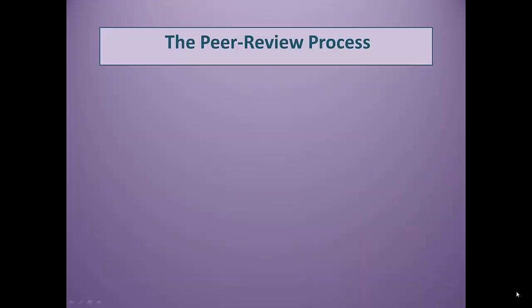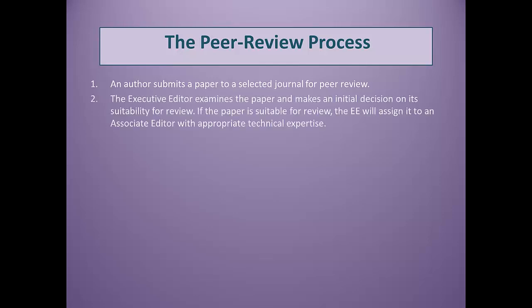The peer review process involves the following steps. First, an author submits a paper to a selected journal for peer review. The executive editor then examines the paper and makes an initial decision on its suitability for review. He or she may immediately decline papers that do not appear suitable either because of scope or quality; otherwise, the executive editor will assign the paper to an associate editor with appropriate technical expertise.